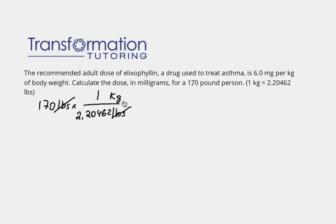The way we convert is: the unit we want to get rid of, we put at the bottom so they cancel. The unit we want, we put at the top. So we put pounds on the bottom, kilograms on the top, and use the ratio given to us in the problem. Now we have kilograms.